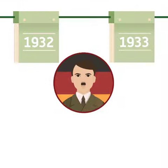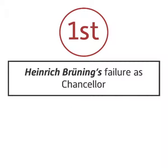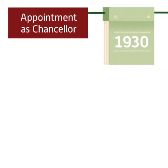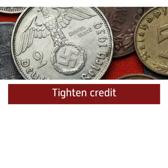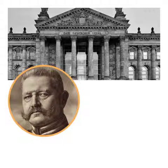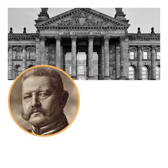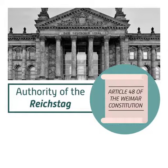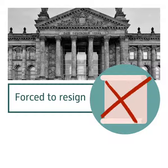There were several key events between 1932 and 1933 that led to the appointment of Hitler as Chancellor. The first was Heinrich Brüning's failure as Chancellor. Brüning was confronted with the Great Depression shortly following his appointment as Chancellor in early 1930. His response was to tighten credit, cut wages, and reduce government aid to the unemployed. He established a presidential government, using President Paul von Hindenburg's constitutional powers, namely Article 48, to pass emergency decrees without the authority of the Reichstag. Brüning's policies were extremely unpopular, and in May 1932 he was forced to resign.